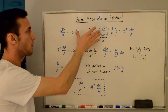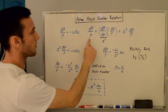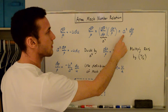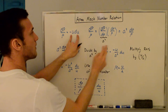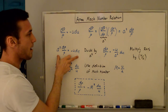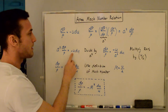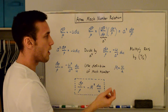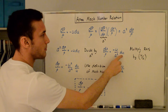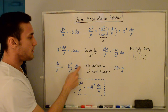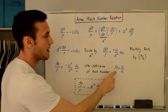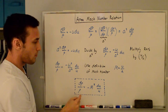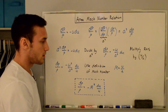So we have dP/ρ equal to a²·dρ/ρ, which equals −u·du from the momentum equation. Dividing both sides by a² gives dρ/ρ = −(u/a²)·du. Multiplying the right-hand side by u/u — which equals one — gives us dρ/ρ = −(u²/a²)·(du/u). Using the definition of Mach number M = u/a, the term u²/a² is simply M². So we arrive at the expression: dρ/ρ = −M²·(du/u).